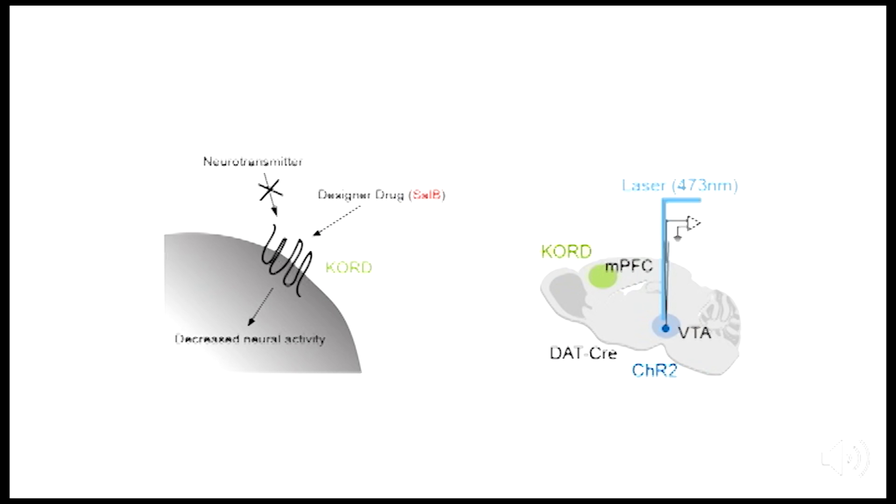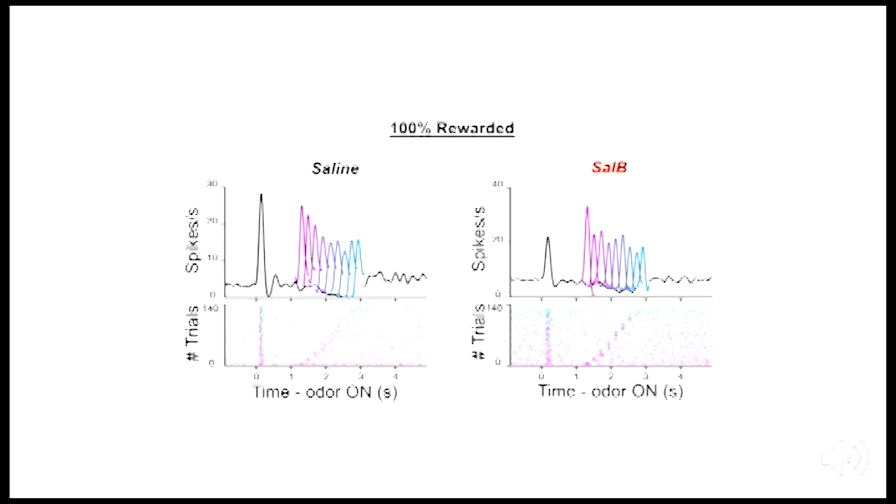In the current study, we inactivated the medial prefrontal cortex using a chemogenetic approach called Kappa Opioid Receptor DREAD, or KORD for short, which is activated by a designer drug called Salvinorin B, or Sal B for short, while recording from dopamine neurons in the same two tasks. Here I'm showing some example dopamine neurons we recorded in the 100% rewarded task. In the control condition, similar to before, neurons showed negative temporal modulation as if reward expectation increased as a function of time. Upon shutting down the medial prefrontal cortex using Sal B, neurons still showed this negative temporal modulation.